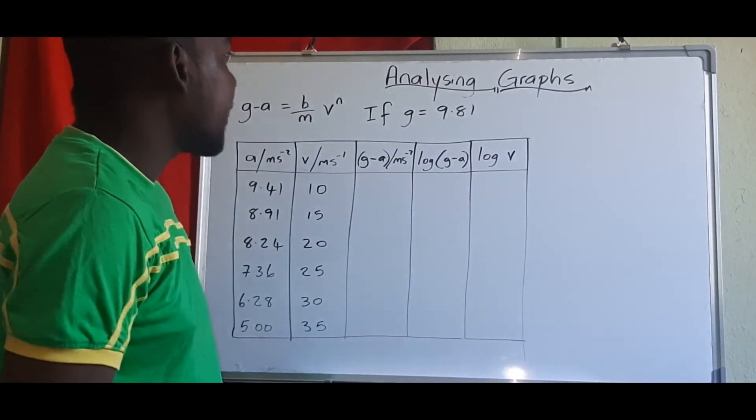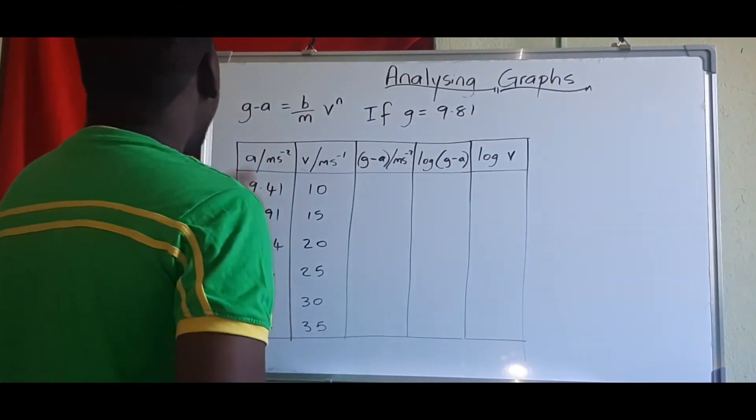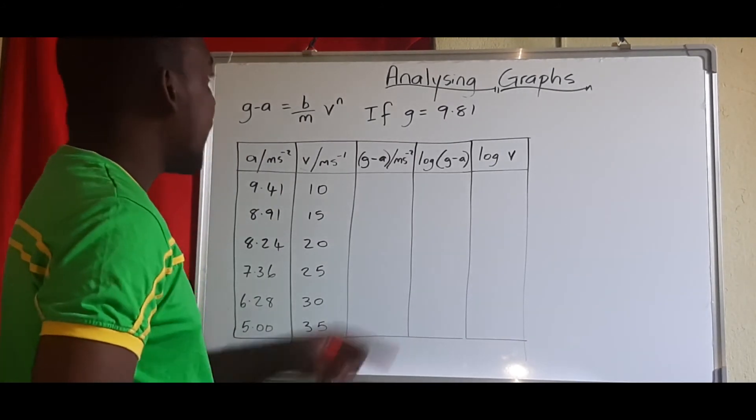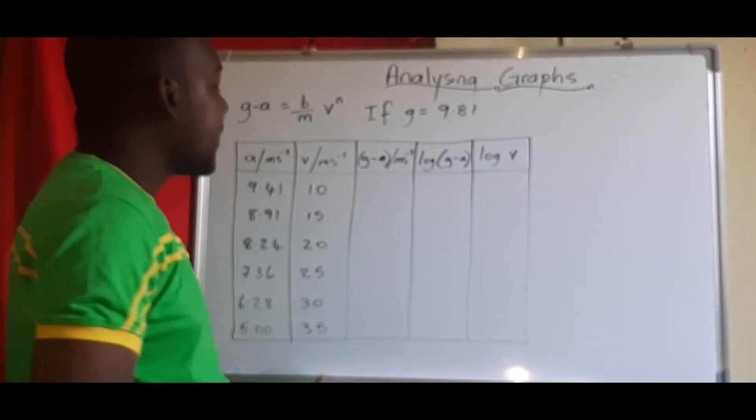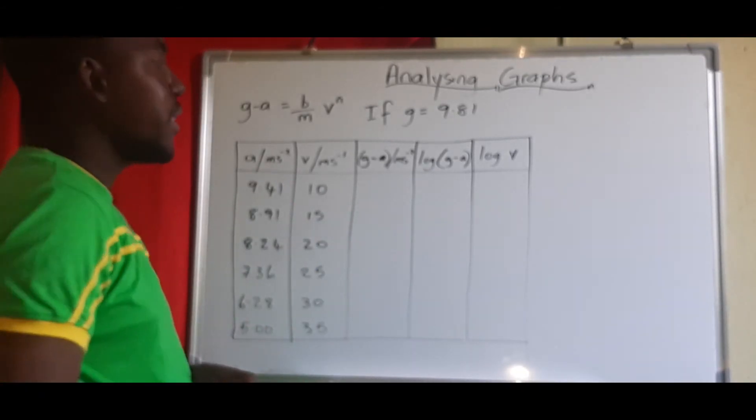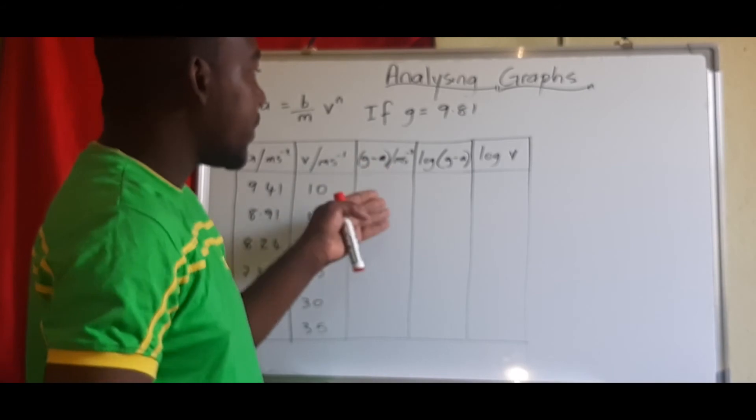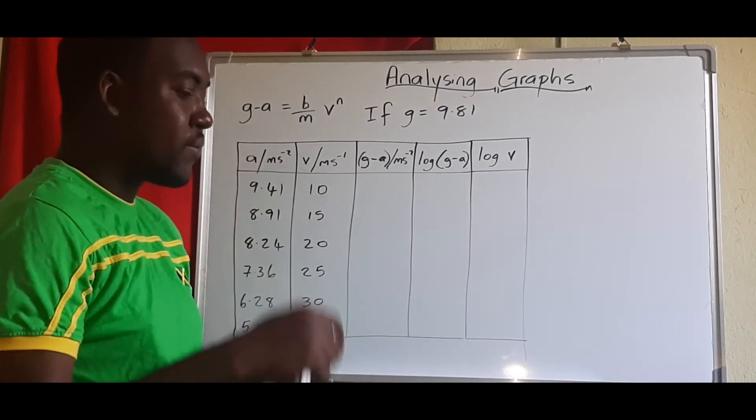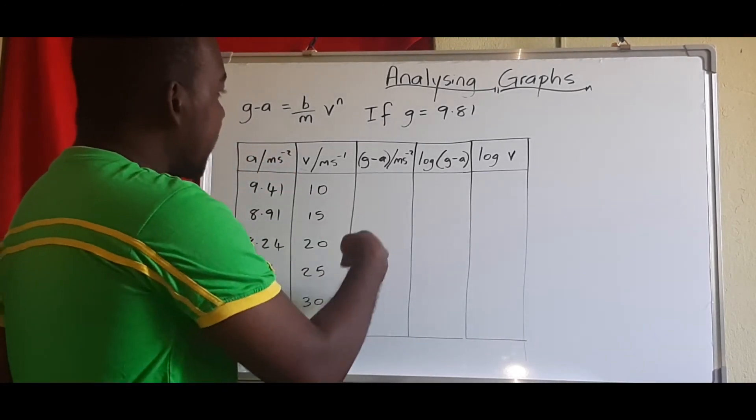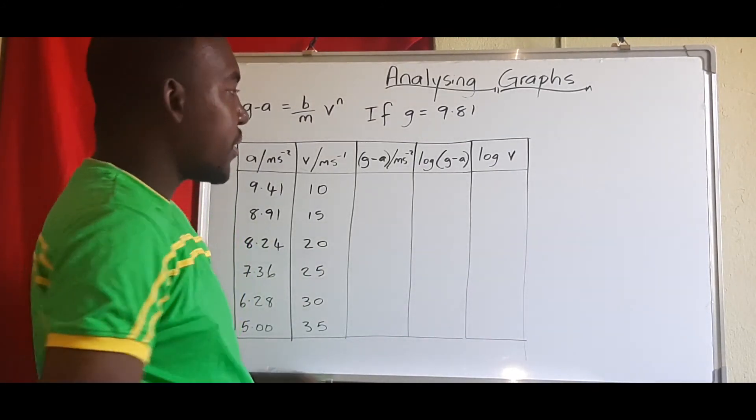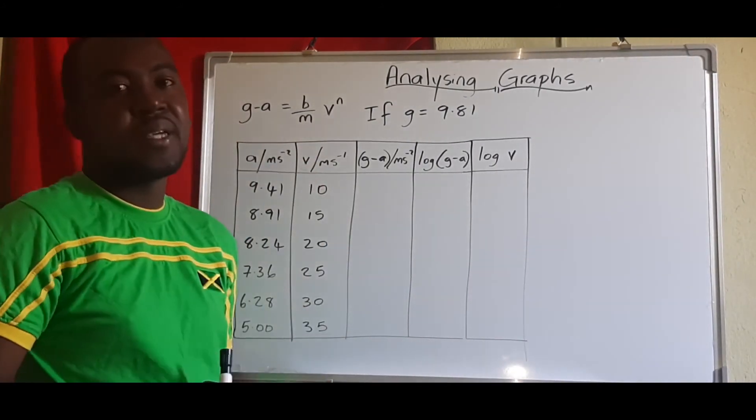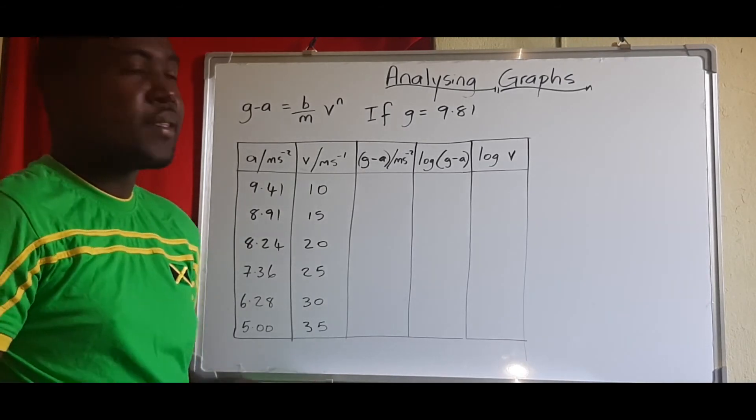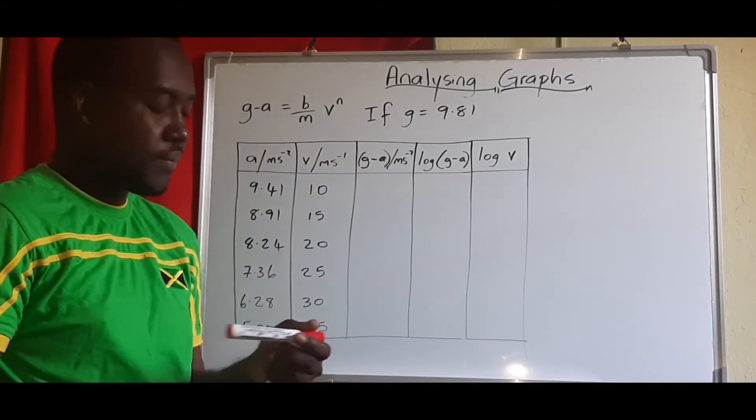All right, so let's look at a second one here. And in this case, we have g minus a equals b over m times v to the n power. And g here is 9.81. So if you notice, I've left the table here blank, because I want you guys to actually do fill out these information here at home, and then you actually give me a comment there to actually tell me what you got for each, with the understanding of the previous table that we did. So just let's look at getting this equation to get a straight line graph.